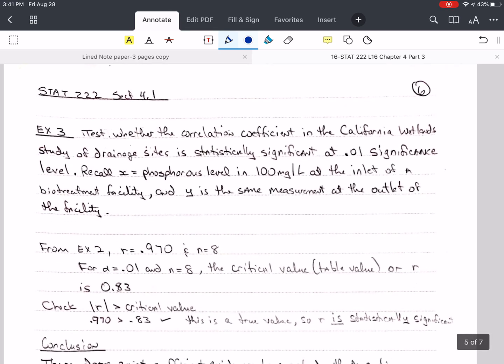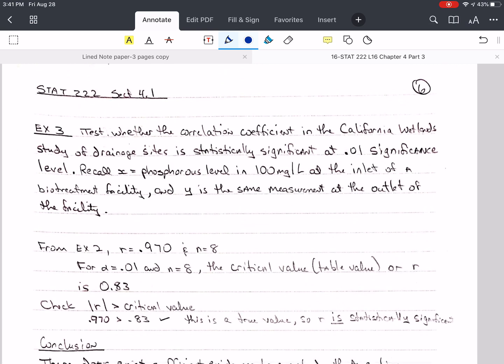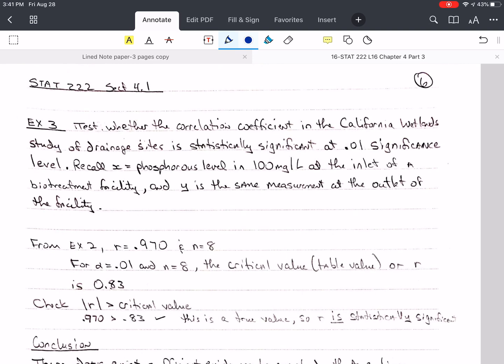Okay. So let's take this example. We want to test whether the correlation coefficient in the California wetland study of drainage sites is statistically significant at a 0.01 significance level. I need to tell you that means alpha equals 0.01. Significance level is alpha.